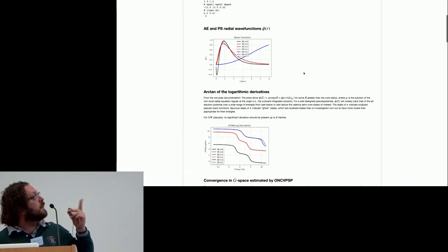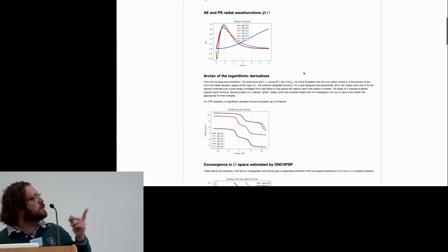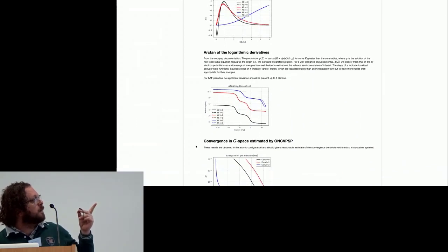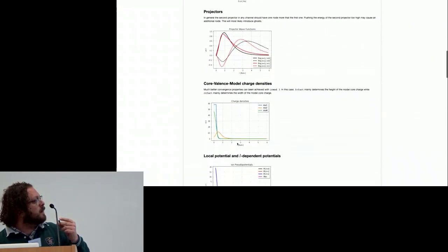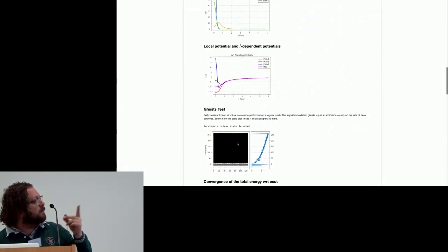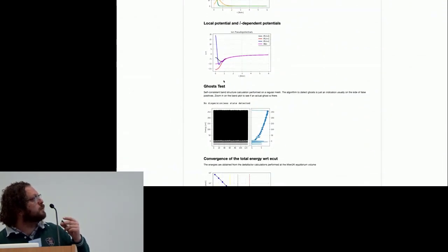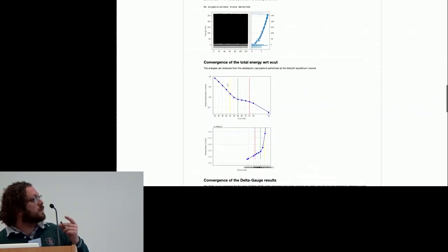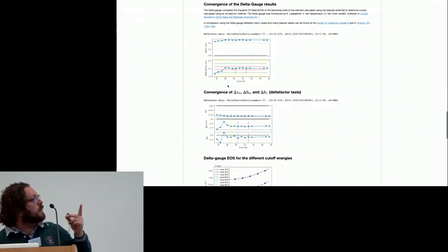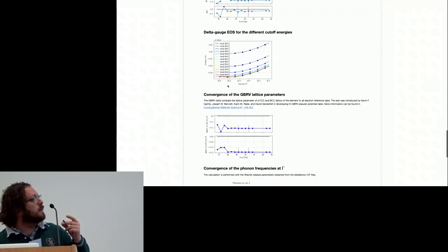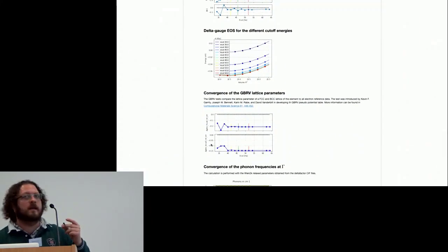the electron and the pseudized radial wave functions, the logarithmic derivative between minus 15 and plus 15 Ry. And in the last part we have plots associated to the ghost test, the convergence of the total energy, the delta factor, and the GBRV results. All these tests are performed as a function of the cutoff energy. And thank you for your attention.